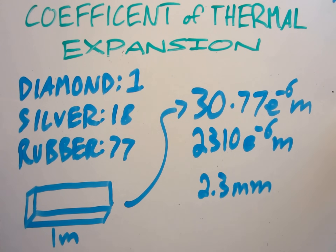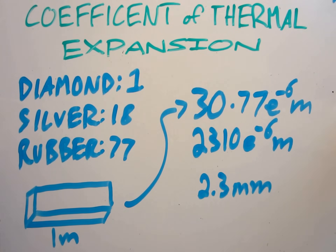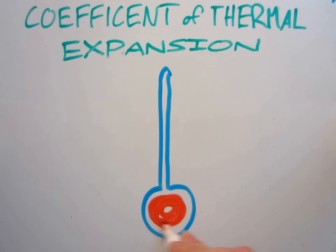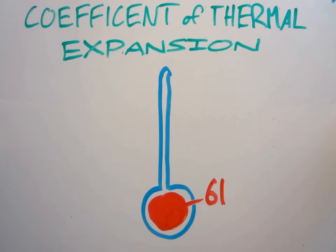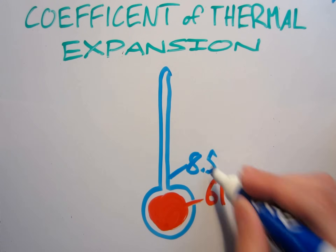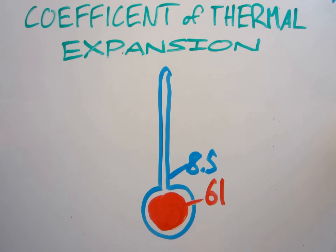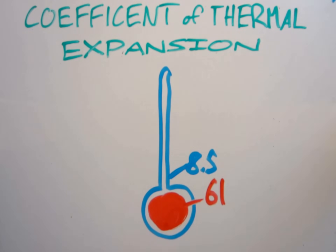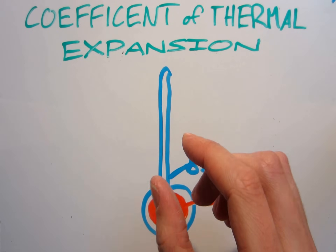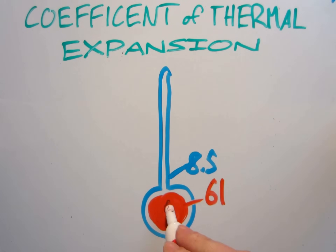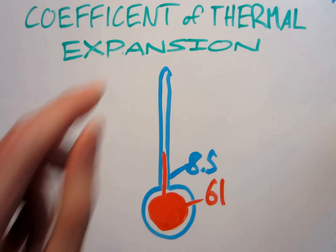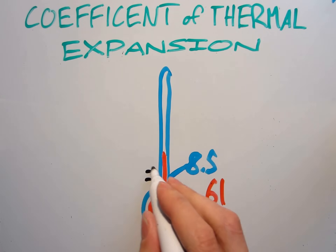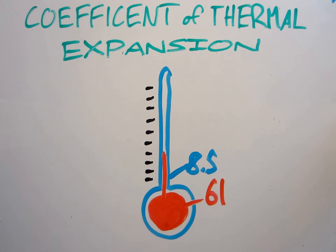You can take advantage of these different rates of expansion to do some interesting things. Take for example the classic mercury glass thermometer. Mercury has a coefficient of 61, while glass is only at 8.5. The idea is that the pool of mercury expands significantly when the temperature rises, but the glass encasing it doesn't. As the mercury expands, it's forced up into a very thin tube. The height it reaches can then be used to precisely measure its relative expansion, giving us a measure of its temperature.